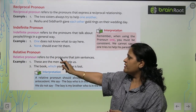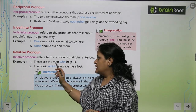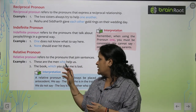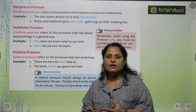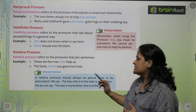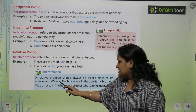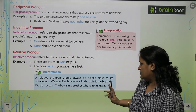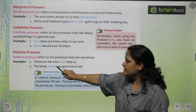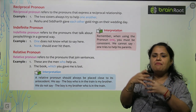Relative pronoun refers to the pronoun that joins sentences. For example: 'These are the men who help us.' 'The book which you gave me is lost.' We are joining two types of sentences using 'who' and 'which' — these come in the category of relative pronoun. A relative pronoun should always be placed close to its antecedent. We say 'the boy who is in the train is my brother,' not 'the boy is my brother who is in the train.' The relative pronoun should always be written close to its noun — men, book, etc.